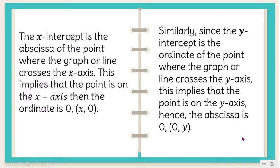Using X intercept and Y intercept, this is the second way on how you can graph a linear equation. The X and Y intercept of the line could represent two points, which are (A, 0) or (X, 0) and (0, B) or (0, Y). Thus, the intercepts are enough to graph the linear equation.